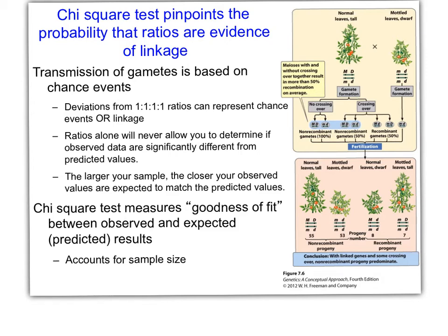Today I have another special guest in my office — welcome, Scooby-Doo! Let's talk about chi-square analysis, which gives us the probability that observed ratios are evidence of linkage. We are trying to show that a deviation from a 1:1:1:1 ratio is really representative of linkage of genes on a chromosome, or if it's just a chance event.